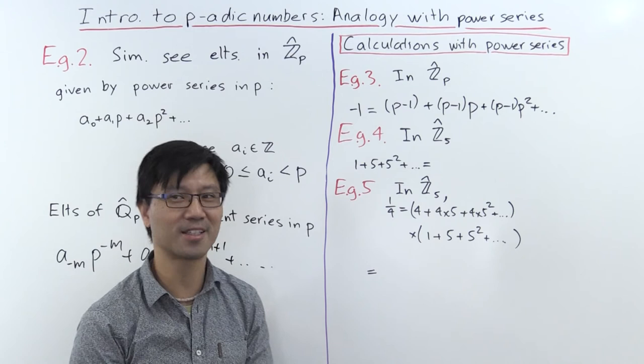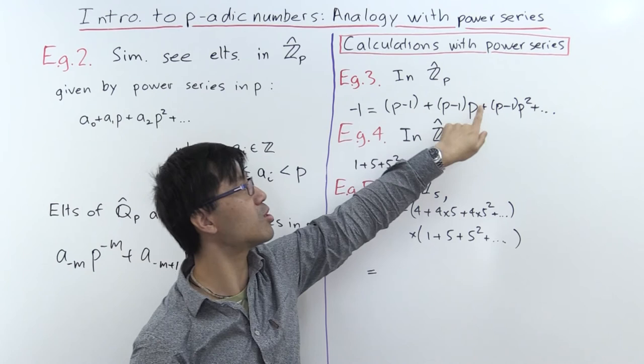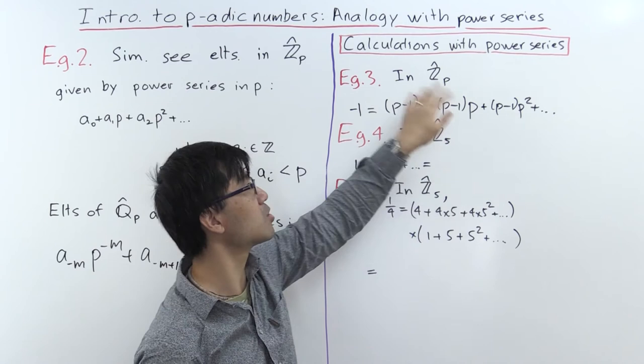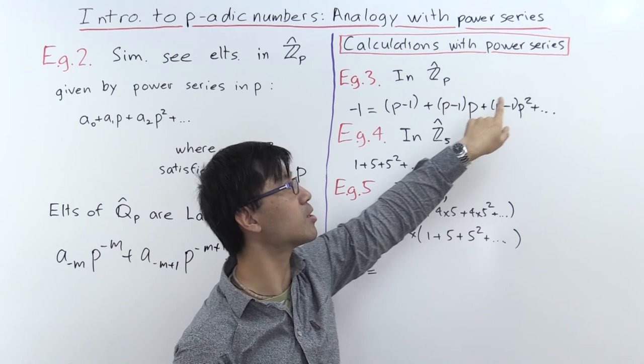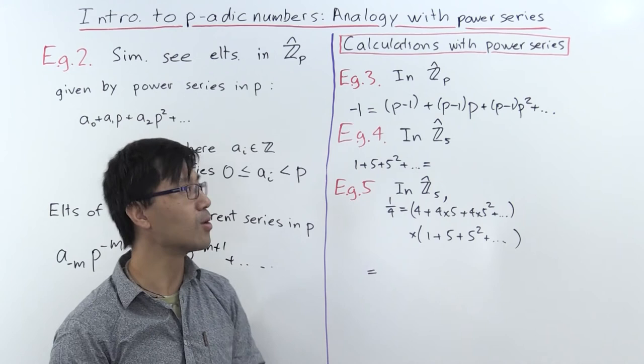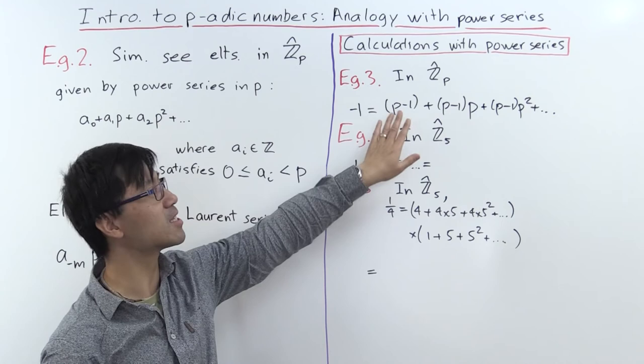If this is minus 1, then adding 1 to it should give 0. Adding 1 gives p in the constant position; then p plus (p−1)·p gives p·p = p², so that's a p squared. These terms keep getting shifted down — you get higher and higher powers of p, which are considered smaller and smaller — so that converges to 0. In this sense, this is indeed minus 1, and that's your power series representation.